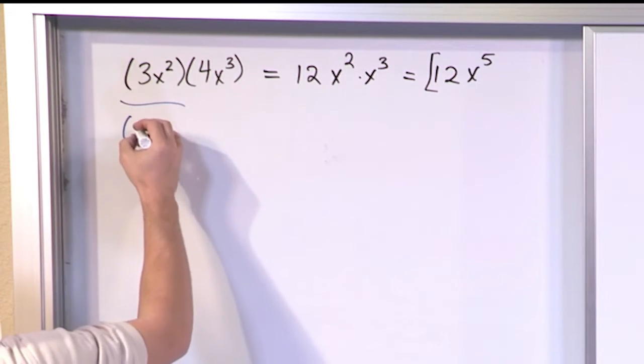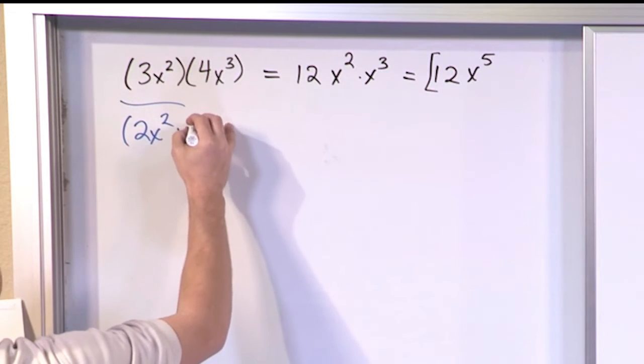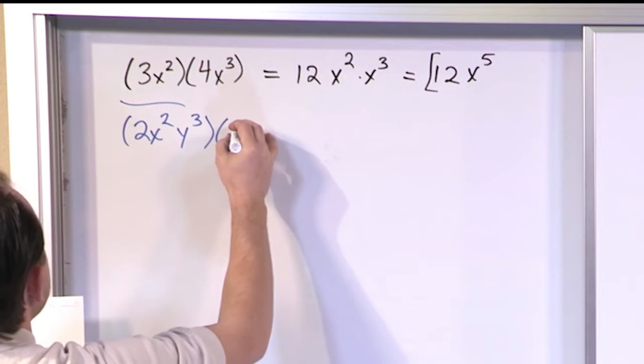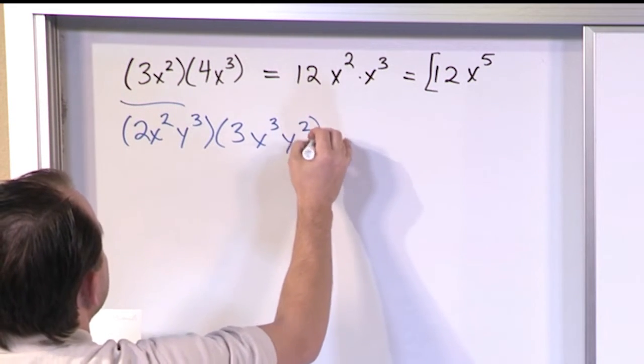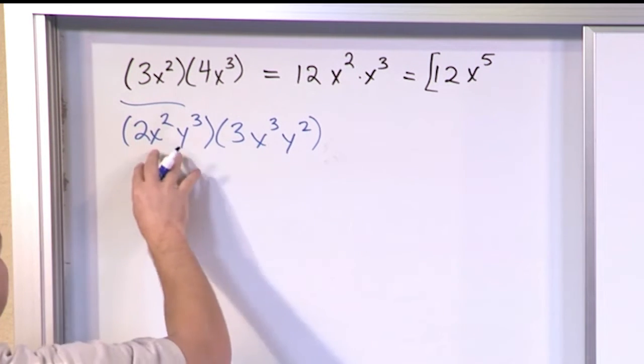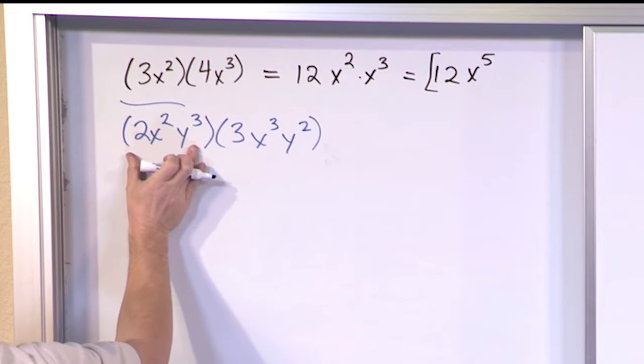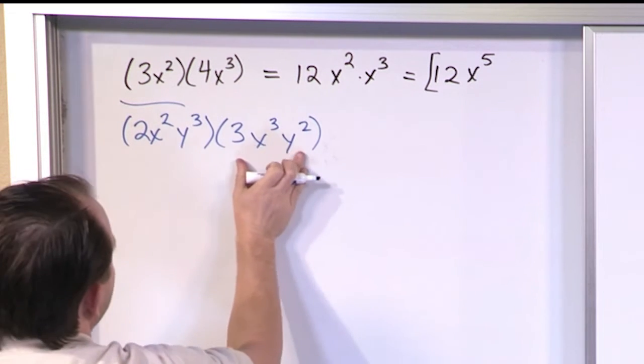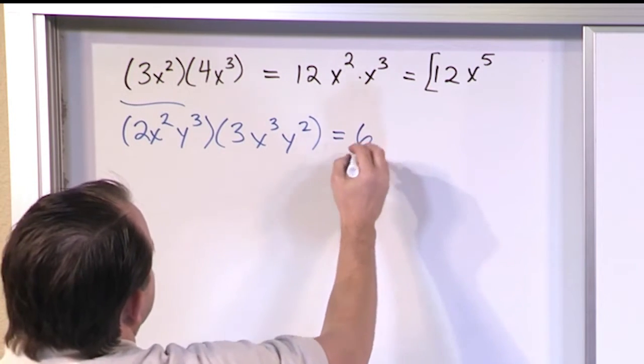But for now let's say we had something like 2x²y³ multiplied by 3x³y². Something like this. So again, there's no plus or minus signs anywhere. So these are not very large. This is a single term polynomial called a monomial multiplied by another monomial. So you have numbers. 2 times 3 you do first is 6.